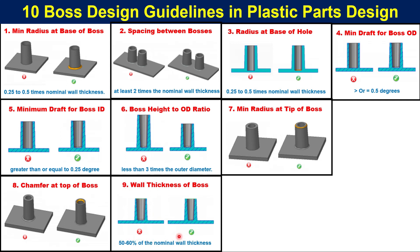Guideline 9: Wall thickness of the boss. The wall thickness of the boss should be around 60 percent of the nominal wall thickness to minimize sinking. If the wall thickness of the boss is greater than this, it can create voids and sink marks in the product.